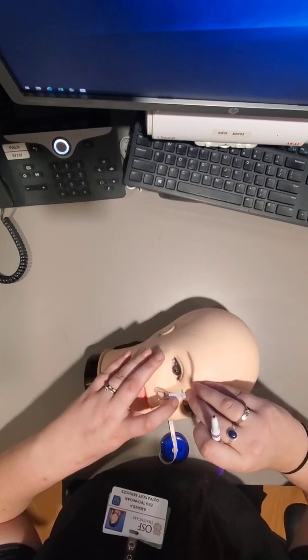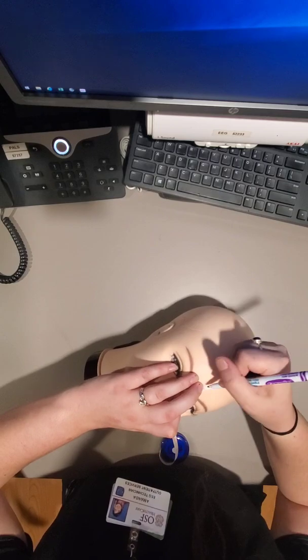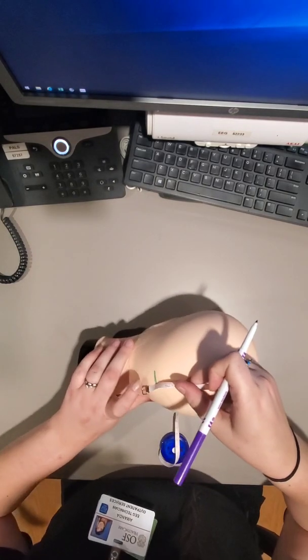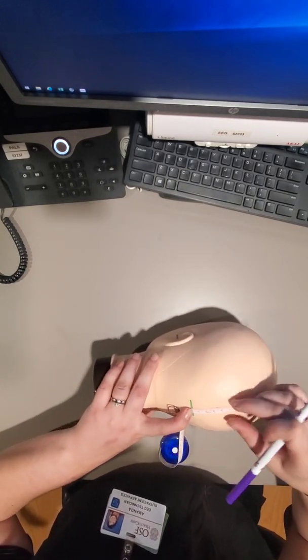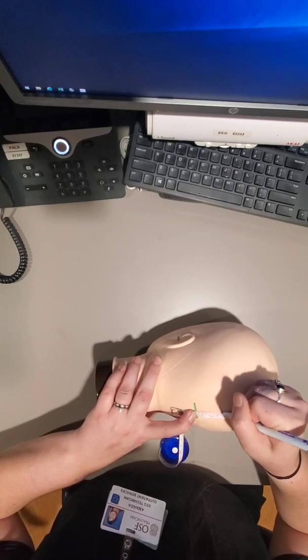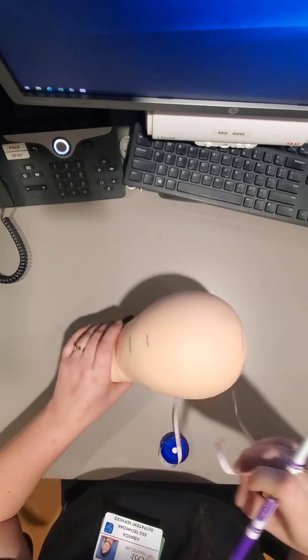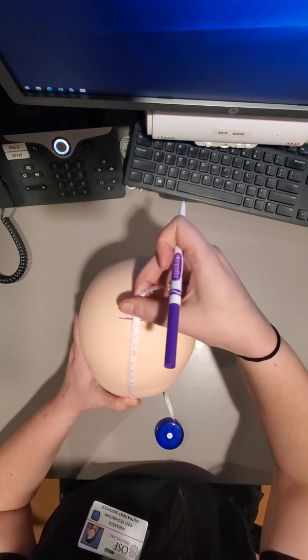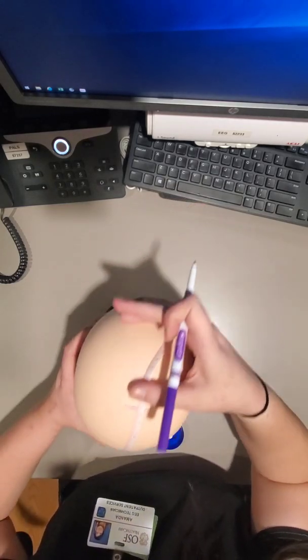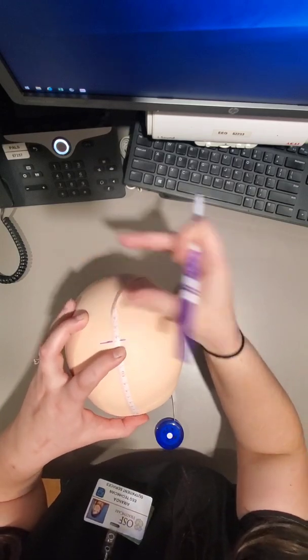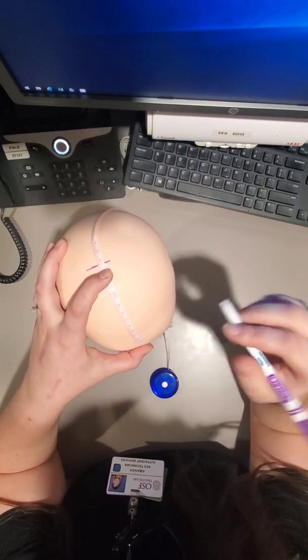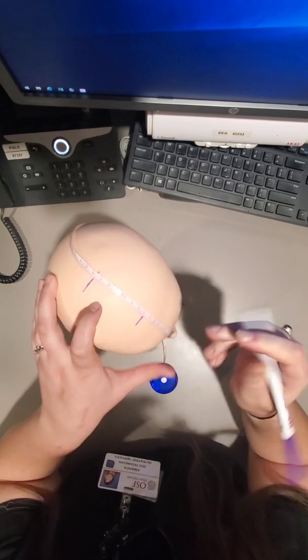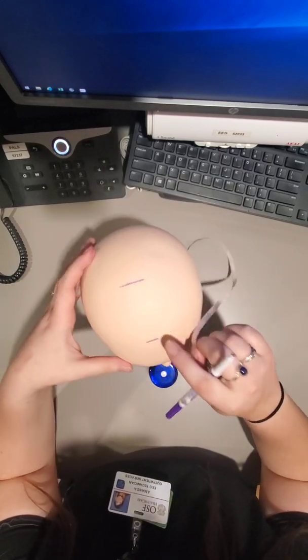I'm going to make FPC mark at 3.4. I'm going to do the same on the back with the inion. Now I measure FPC to CZ, 13.5, 13.5 divided by 2, 6.8. And that's my FC.